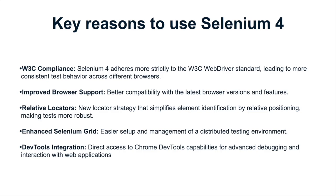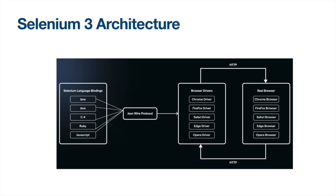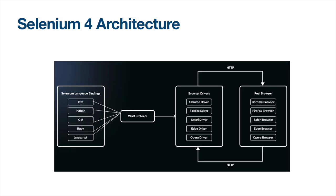You can understand the basic architectural difference between Selenium 3 and Selenium 4 from the diagram here. In Selenium 3, all Selenium bindings — Java, C#, Ruby, JavaScript — were interacting first with the JSON Wire Protocol, which then communicated with the browser drivers like Safari, Opera, and Chrome drivers, which in turn called the real browsers. The browsers returned an HTTP response back through the drivers.